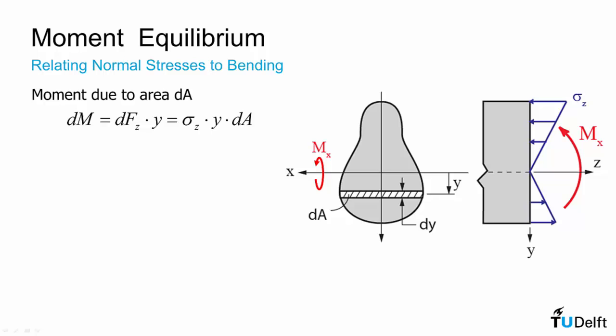the moment due to area da will be the infinitesimal force df times the moment arm y. And we can replace dfz by sigma z times da, as we did in the previous slide.